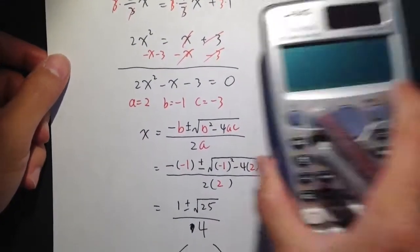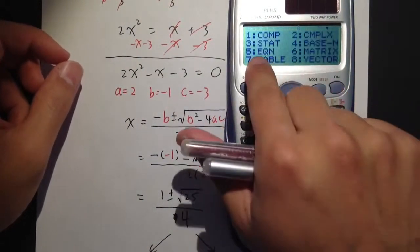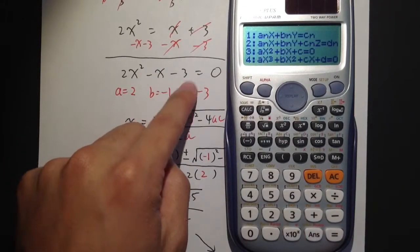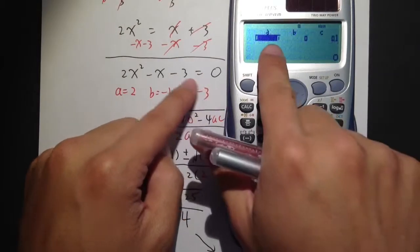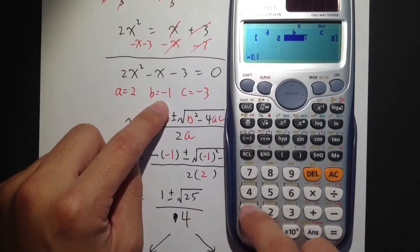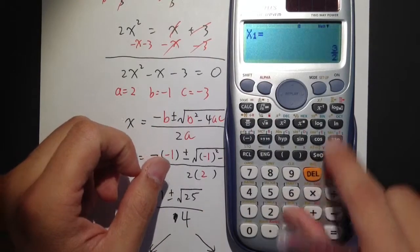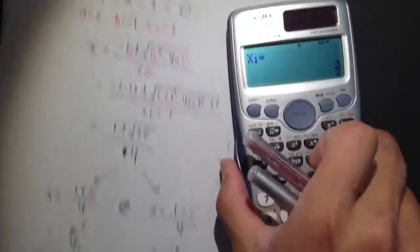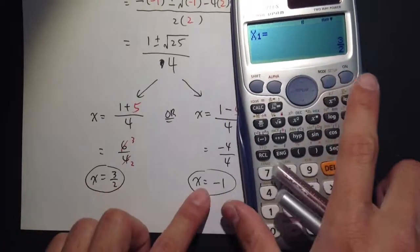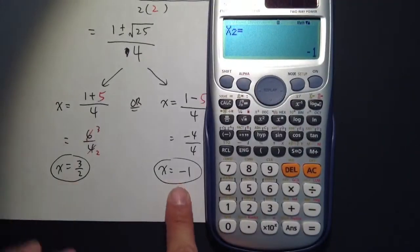And again, let's check with our calculator. Just do this real quick. So go to mode, go to equation. And this is the ax squared plus bx plus c that I want to enter. Go to 3. A is equal to 2. B is equal to negative 1. C is equal to negative 3. And then just hit equal. And as you can see, x1 is indeed 3 over 2, and then x2, the second answer, is indeed negative 1.